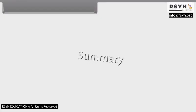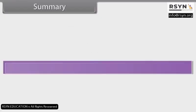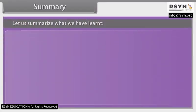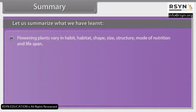Summary: Let us summarize what we have learned. Flowering plants vary in habit, habitat, shape, size, structure, mode of nutrition, and lifespan.